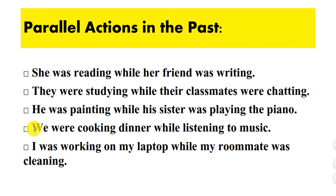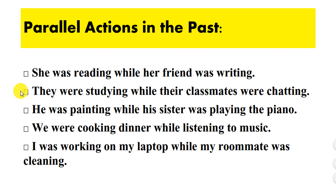The past progressive tense is used to express parallel actions in the past. For example: 'She was reading while her friend was writing.' 'They were studying while their classmates were chatting.' 'He was painting while his sister was playing the piano.'